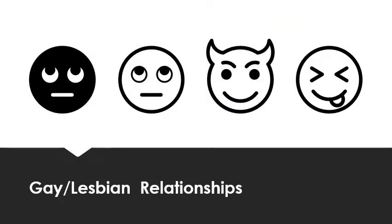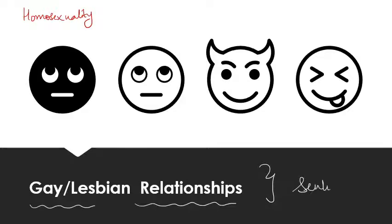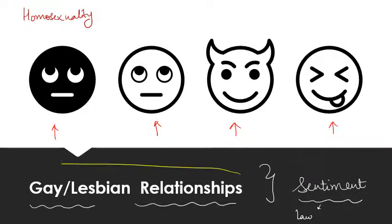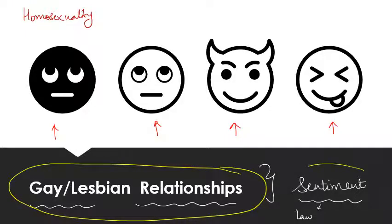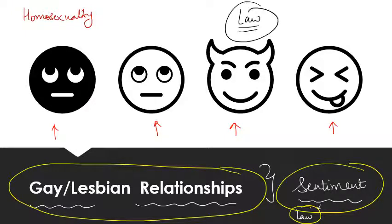For today's session, I will take the laws related to homosexuality to understand our point. When we talk about gay and lesbian relationships, there exists a sentiment in society, and the law has to reflect that sentiment. However, sentiments of different people are different — everyone has a different sentiment about homosexuality. So what does the law do when sentiments vary depending on the person? How does the law resolve such divergence of opinion?